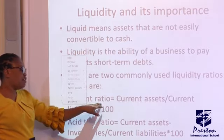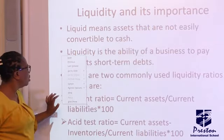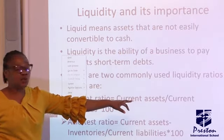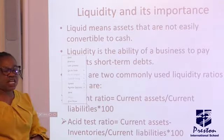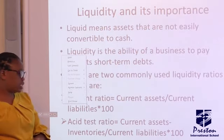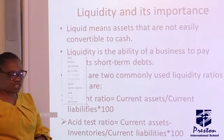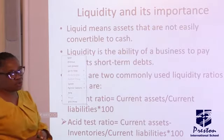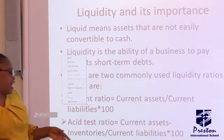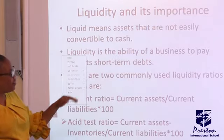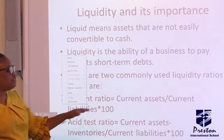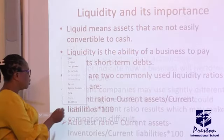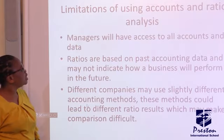You arrive at your current ratio by dividing your current assets by your current liabilities, then multiplying by 100. For the acid test ratio, you take current assets minus inventory, divided by your current liabilities, then multiply by 100.